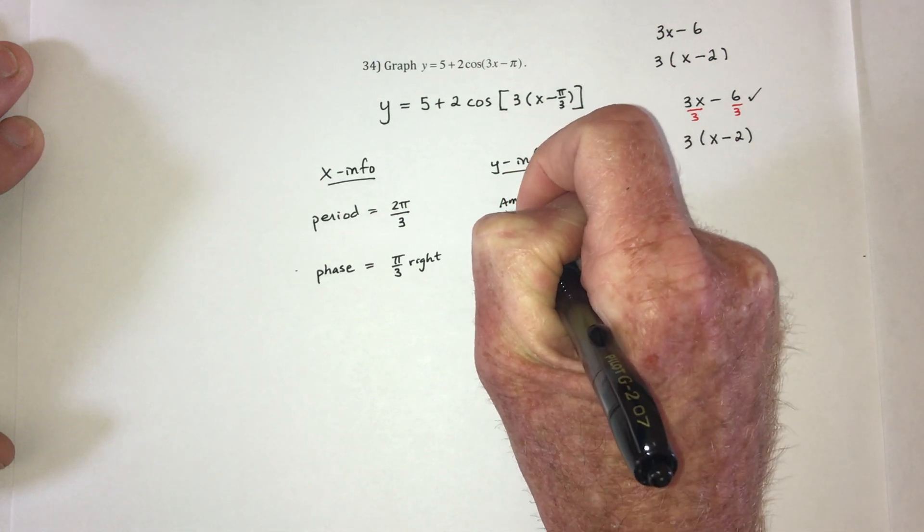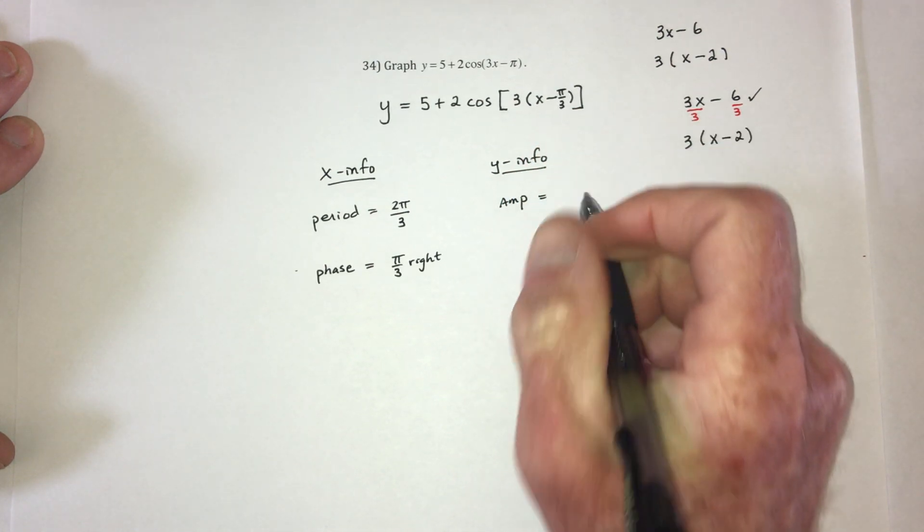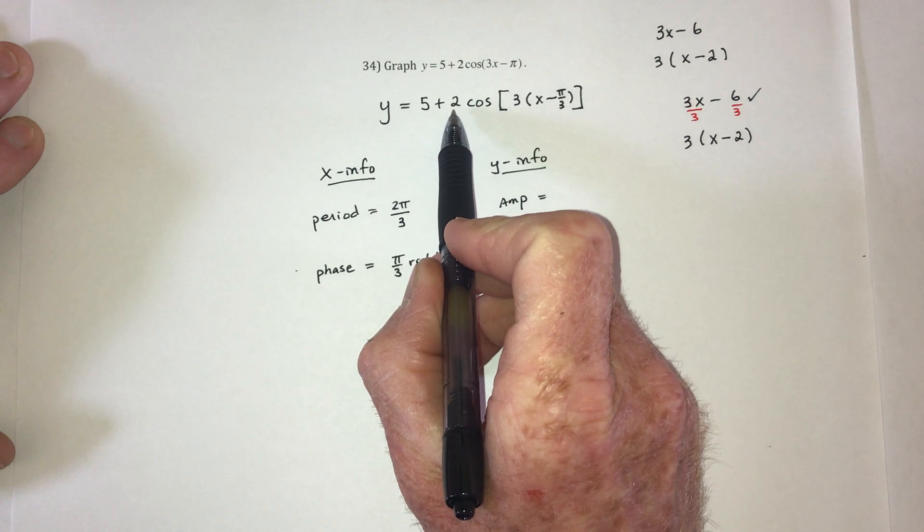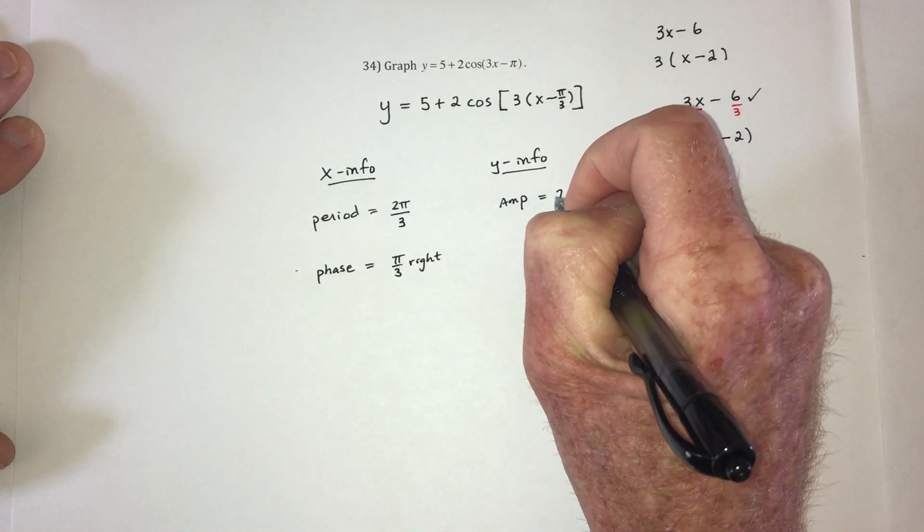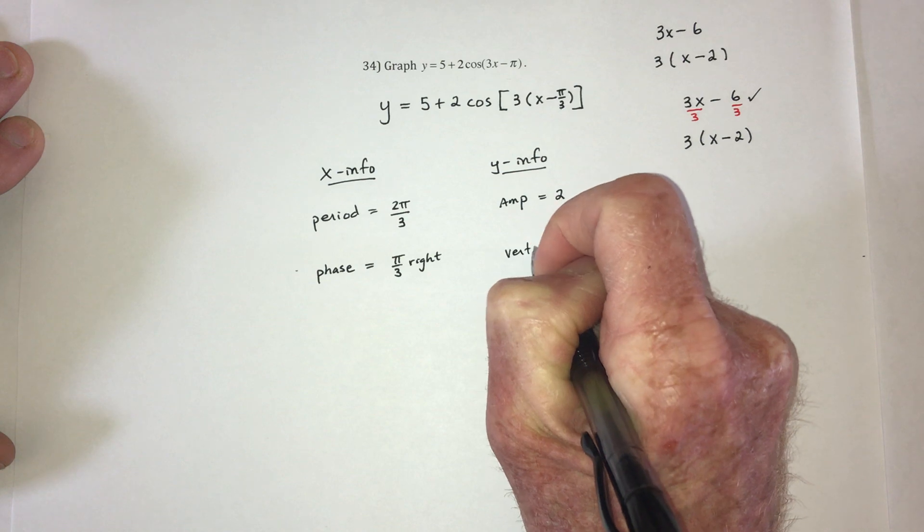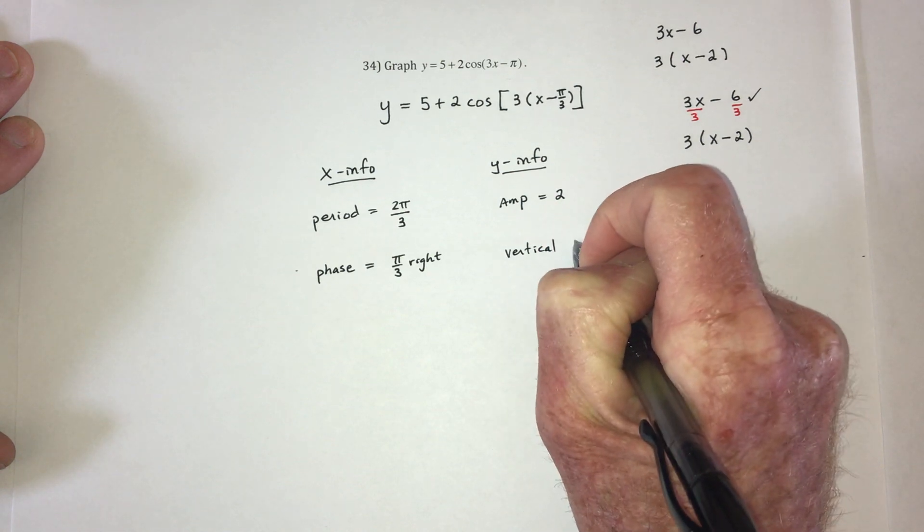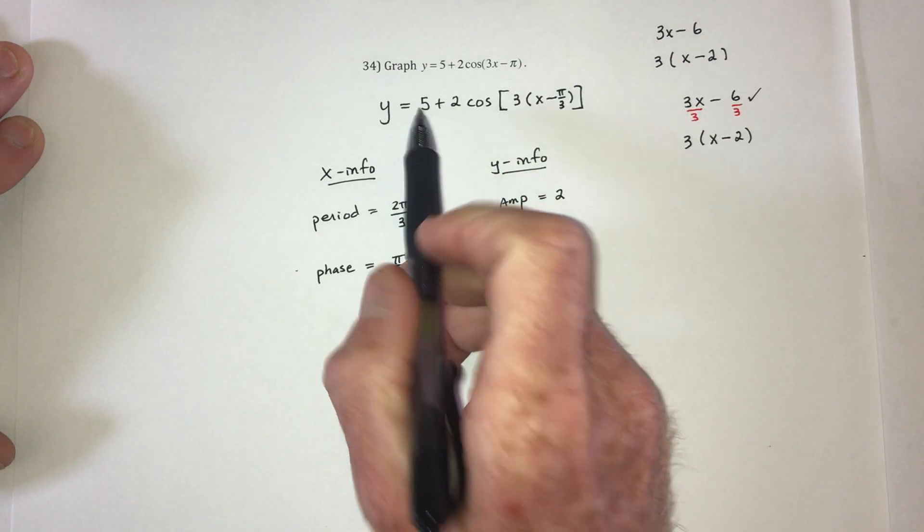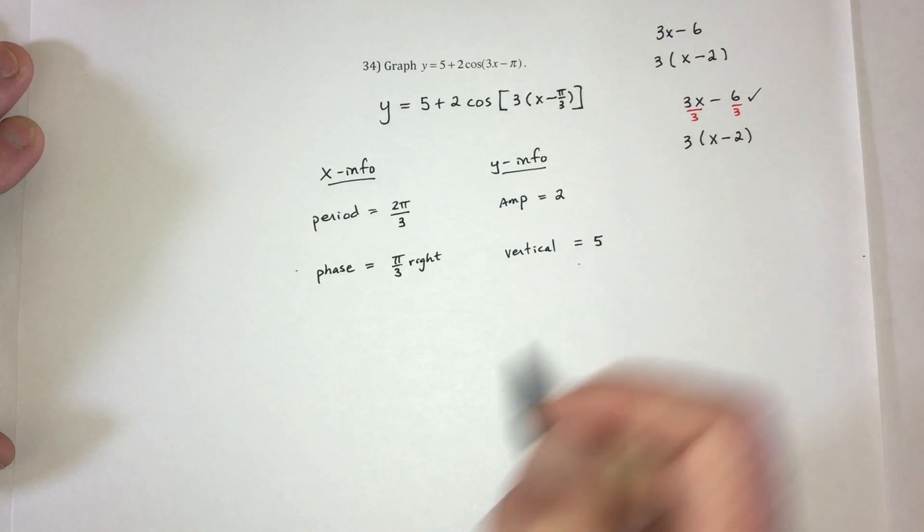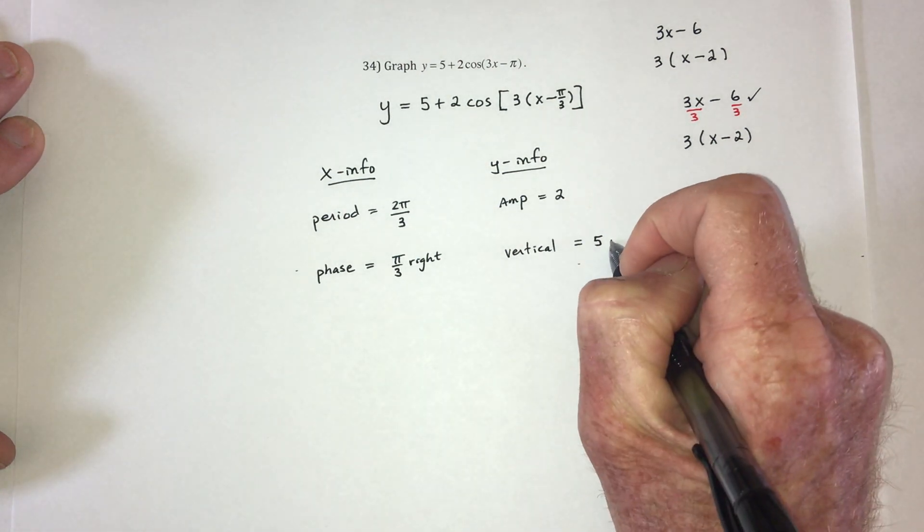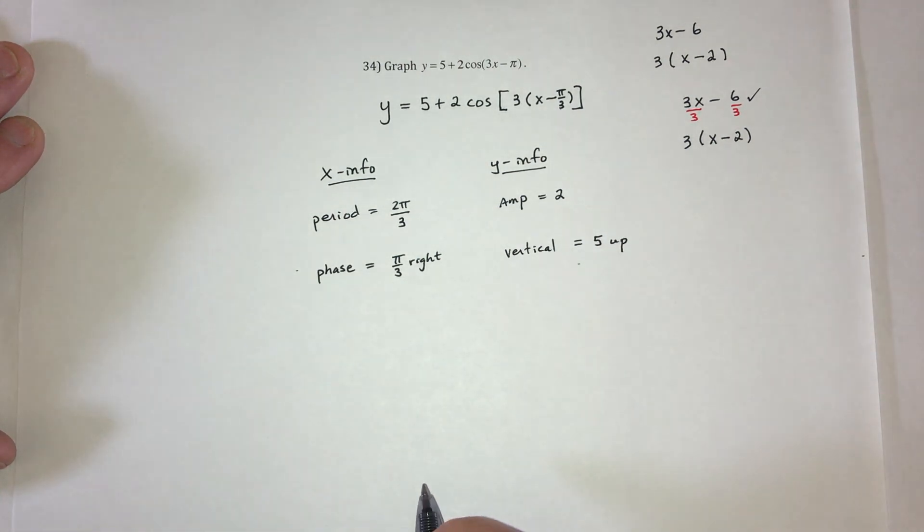Then, for the amplitude. So that comes from this number right here. That's a 2. And then finally, the vertical shift. That's this 5 right here, which you could just leave as a positive 5, or you could emphasize 5 up.